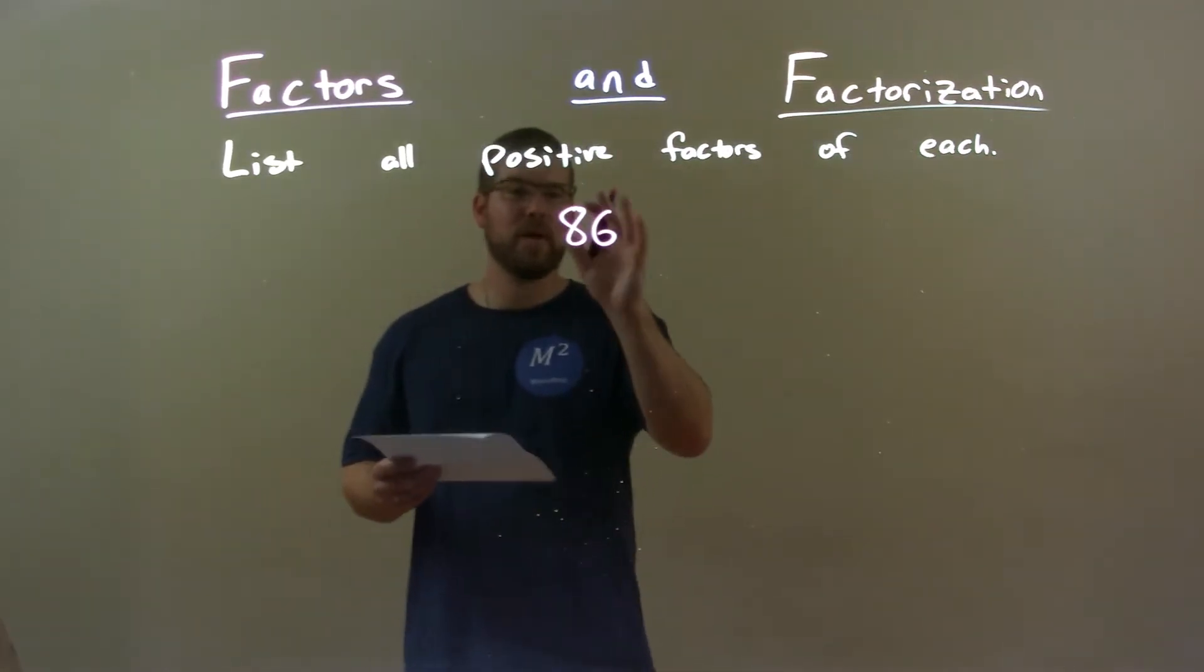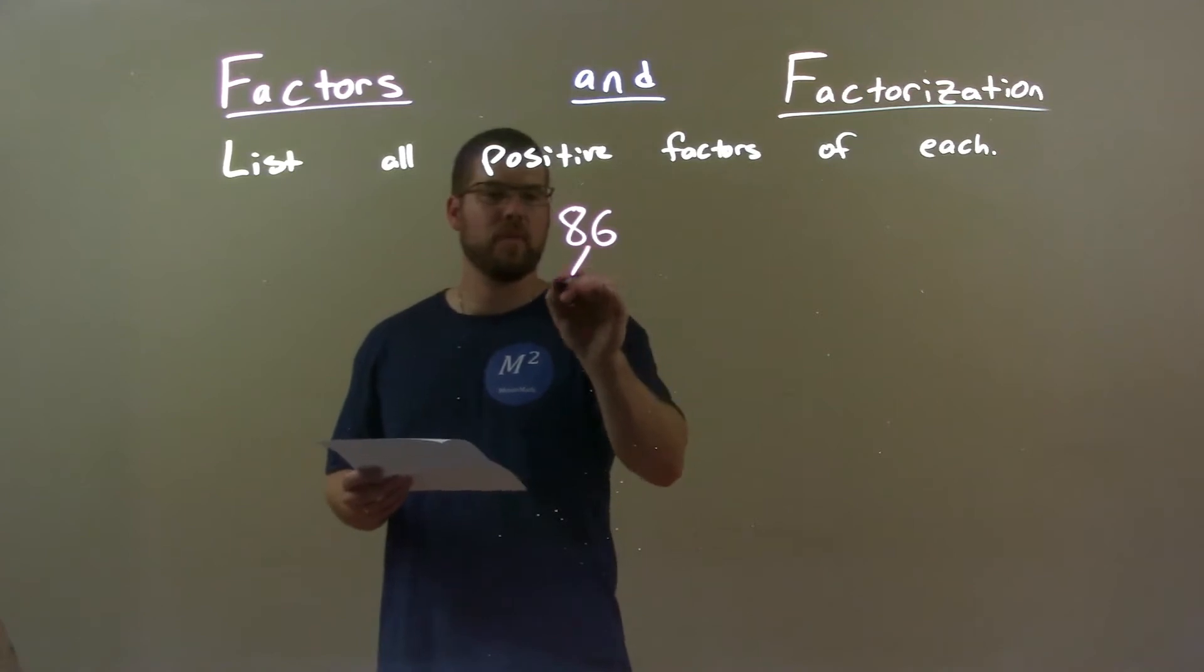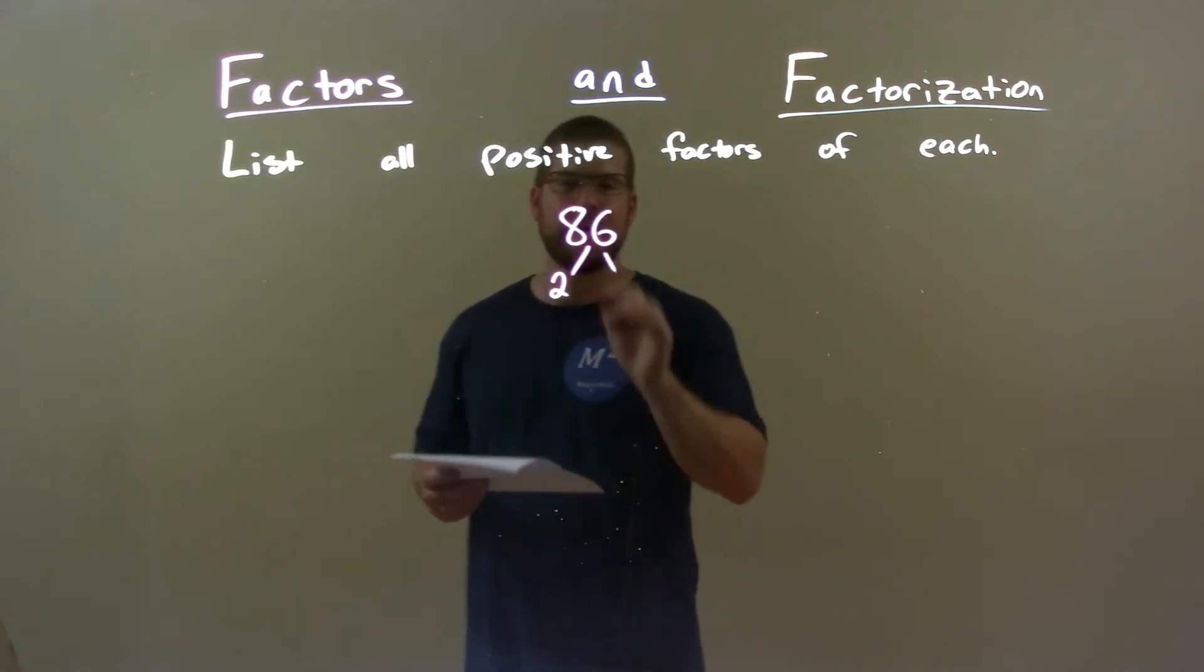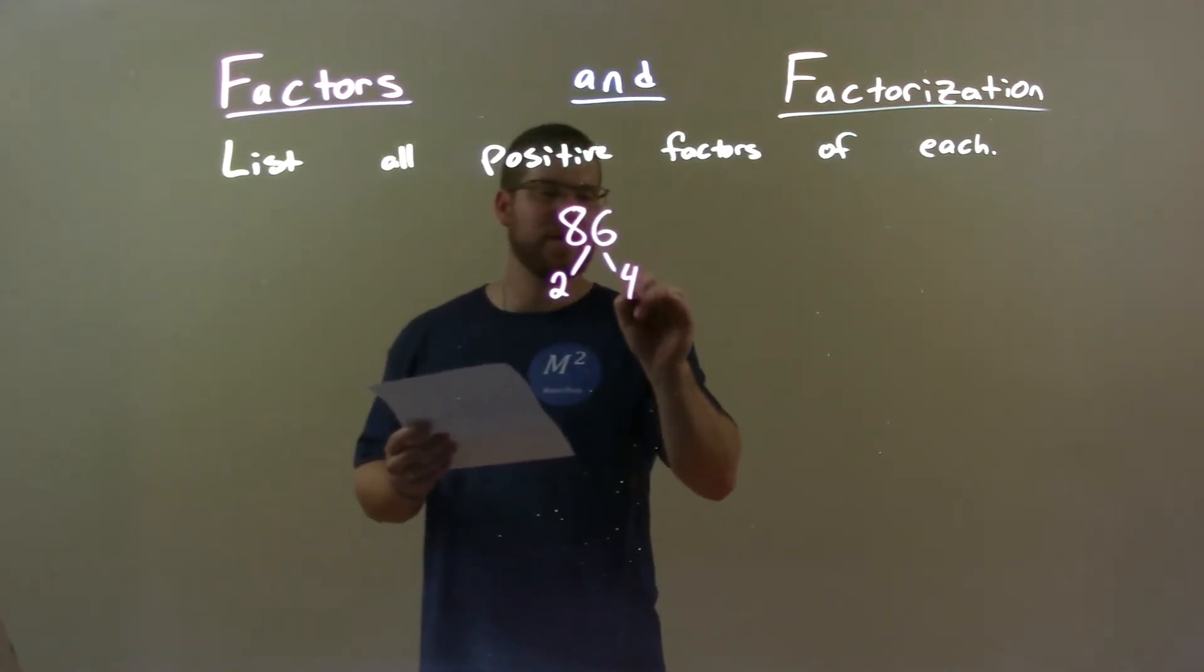The first thing I do is break this down with my prime factorization. We know it's divisible by 2, and 86 divisible by 2 is 43.